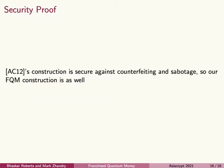This allows the franchised quantum money construction to inherit security properties from the public-key quantum money construction. AC-12 showed that the public-key quantum money construction is secure against counterfeiting, and it's easy to show that it's also secure against sabotage — because every verifier gets the same key and verification is projective. Therefore, if a banknote is accepted by one verifier, it will certainly be accepted by a second verifier. Finally, our franchised quantum money construction is also secure against counterfeiting and sabotage, because otherwise an adversary would be able to distinguish between a franchised and a full verifier.